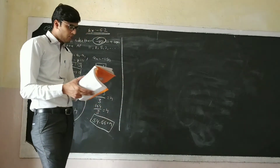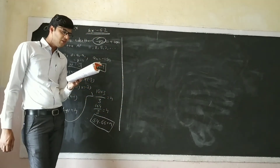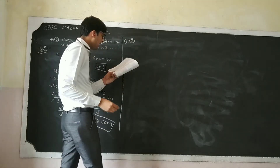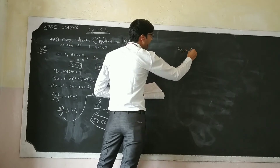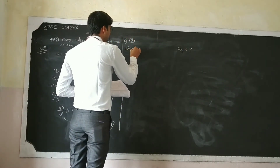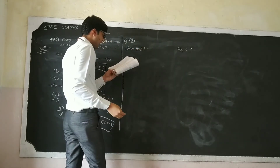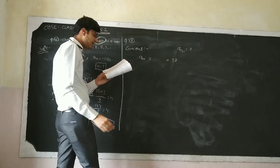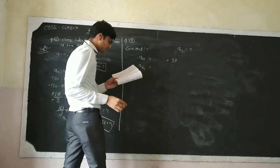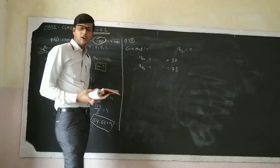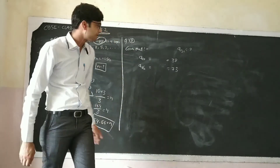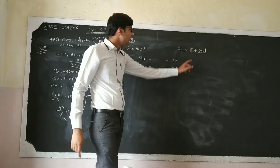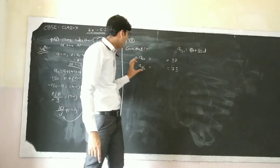Question number 7: find the 31st term of an AP whose 11th term is 38 and 16th term is 73. We need to find A31, which we can write as A plus 30D. So we need the values of A and D. Given: A11 equals A plus 10D equals 38 (equation 1), and A16 equals A plus 15D equals 73 (equation 2).